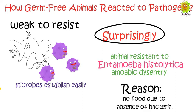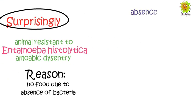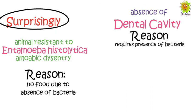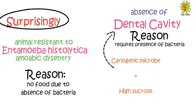Another interesting finding is the absence of dental caries and plaque in germ-free animals, because plaque formation requires the presence of bacteria. However, if scientists inoculate a cariogenic microbe — one that causes cavities — along with a high-sucrose diet, a cavity will develop. Streptococcus gordonii is one of the main examples of a cariogenic microbe.